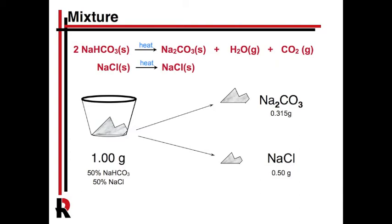We heat it long enough, all of the sodium bicarbonate is going to get converted into sodium carbonate. We're starting with 0.5 grams of sodium bicarbonate. So in this case we're only going to get 0.315 grams of sodium carbonate. Chloride on the other hand doesn't change whatsoever. So it's going to all still be a half gram. It was a half gram to begin with, it was a half gram afterwards.